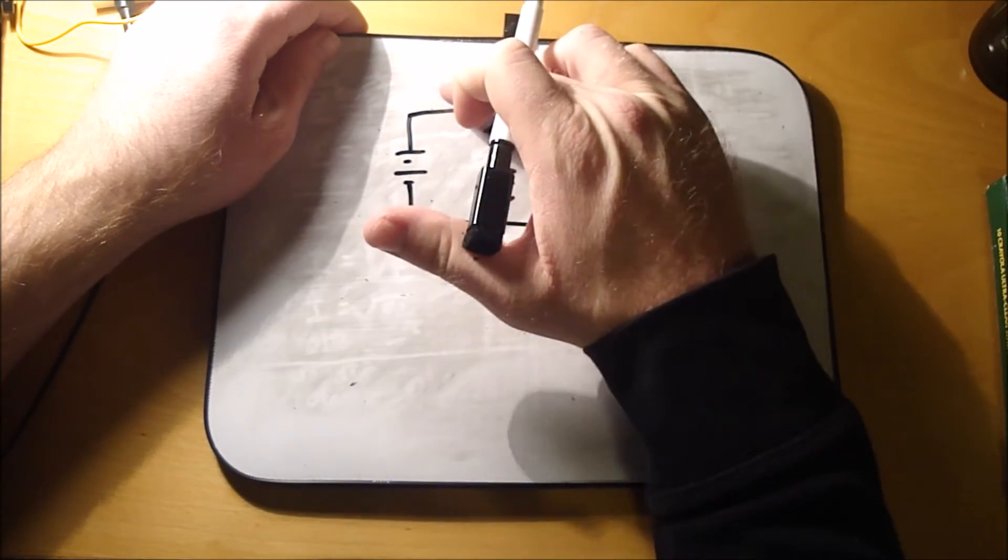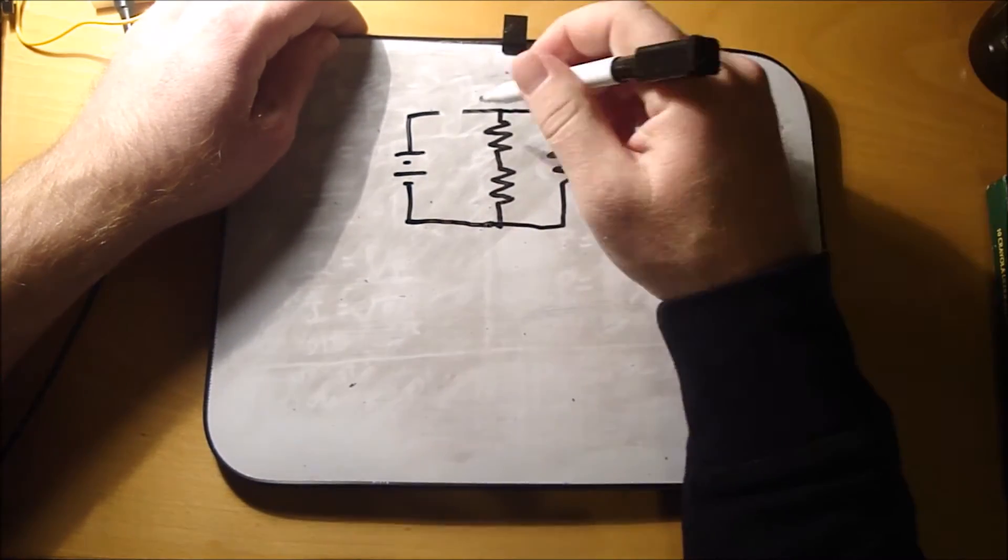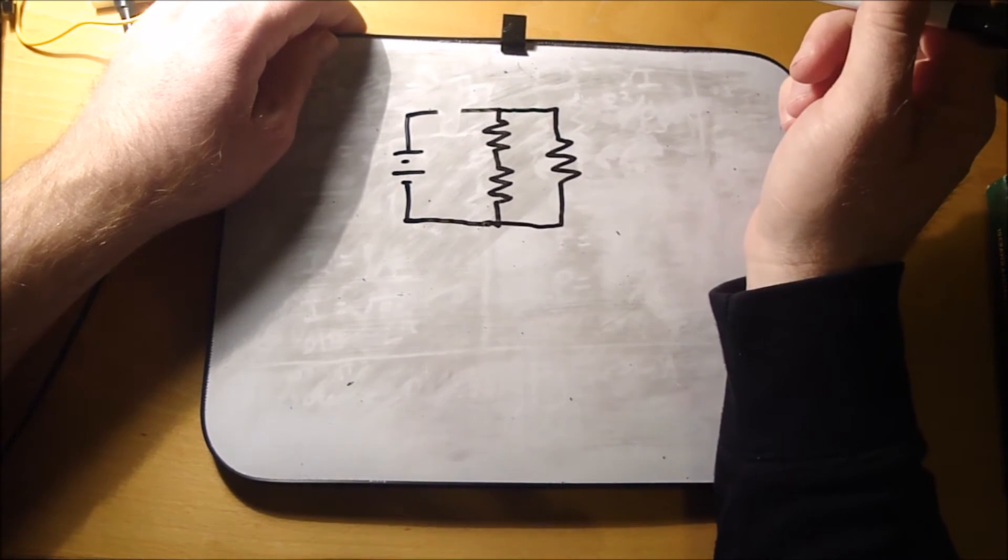An open is anything that breaks a circuit. So let's say you get your wire cut there. Now you got an open.